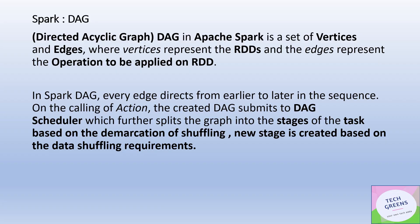A Directed Acyclic Graph in Apache Spark is basically a tree representation — it's a set of vertices and edges, where the vertices represent the RDDs and the edges represent the operations to be applied on that RDD in sequence. In Spark DAG, every edge directs from the previous or parent RDD to the later one in the sequence.